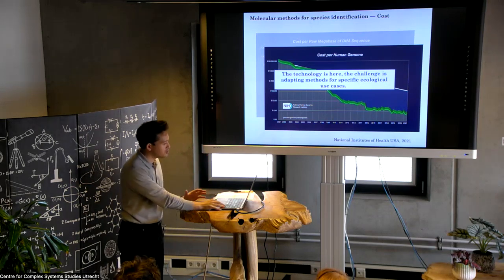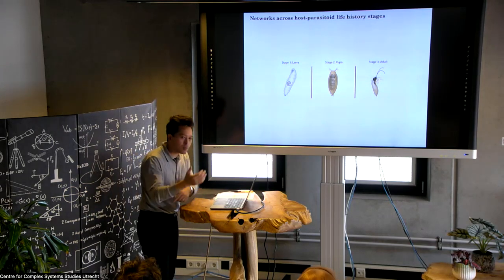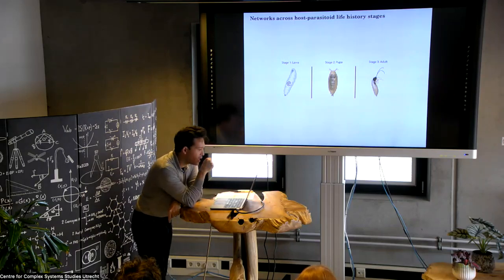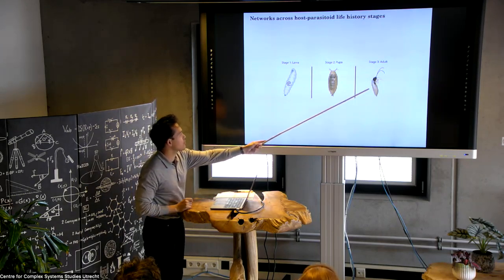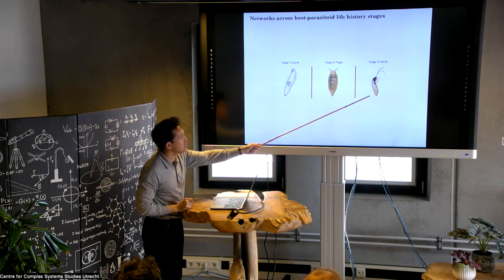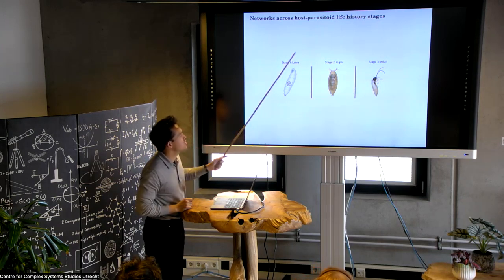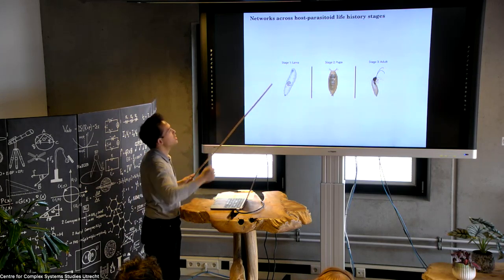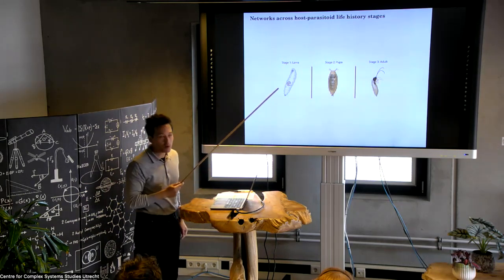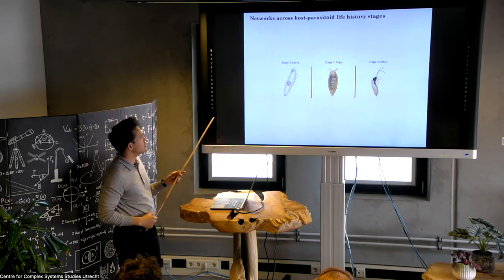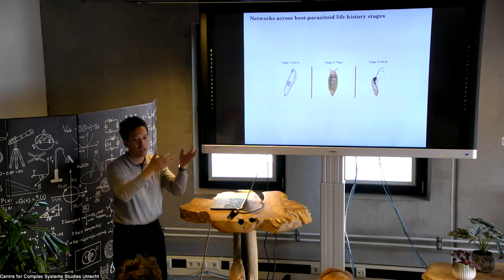I want to give a few examples of what ecologists are doing, starting with some of my own work involving molecular sequencing. I've talked about host-parasitoid networks — primarily we lay out traps, collect hosts that are sometimes infected by parasitoids, and rear them in the lab. The adult parasitoids leave the host, kill the host, and then you can identify both the host and the parasitoid to build the webs. But this is the final stage of what I'd call a three-stage process that involves the life history of a parasitoid, and what we're using molecular sequencing to do is try to build food webs across the life history stages.